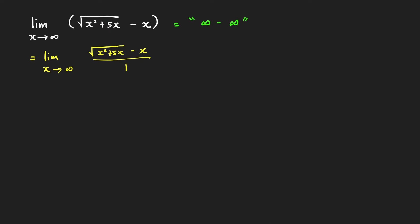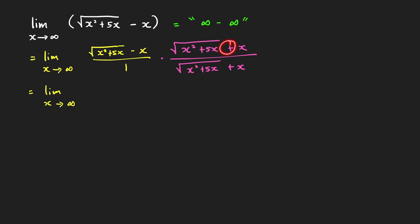We multiply the numerator and denominator by (√(x² + 5x) + x). This gives us the limit as x approaches infinity of (x² + 5x) - x² over (√(x² + 5x) + x), using the sum times difference special product. The x² terms cancel, leaving 5x in the numerator over (√(x² + 5x) + x) in the denominator.